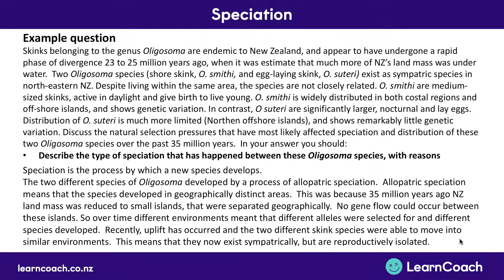However, they are reproductively isolated and cannot reproduce together - one gives birth to live young, and the other lays eggs. We knew to give this answer because the question stated that 23 to 25 million years ago, much more of New Zealand's land mass was underwater, so we can assume they would have been separate. The fact that they've developed so differently means they must have undergone very different environmental pressures. Now that New Zealand's land has uplifted, we can say they live sympatrically, but before, they must have developed allopatrically.